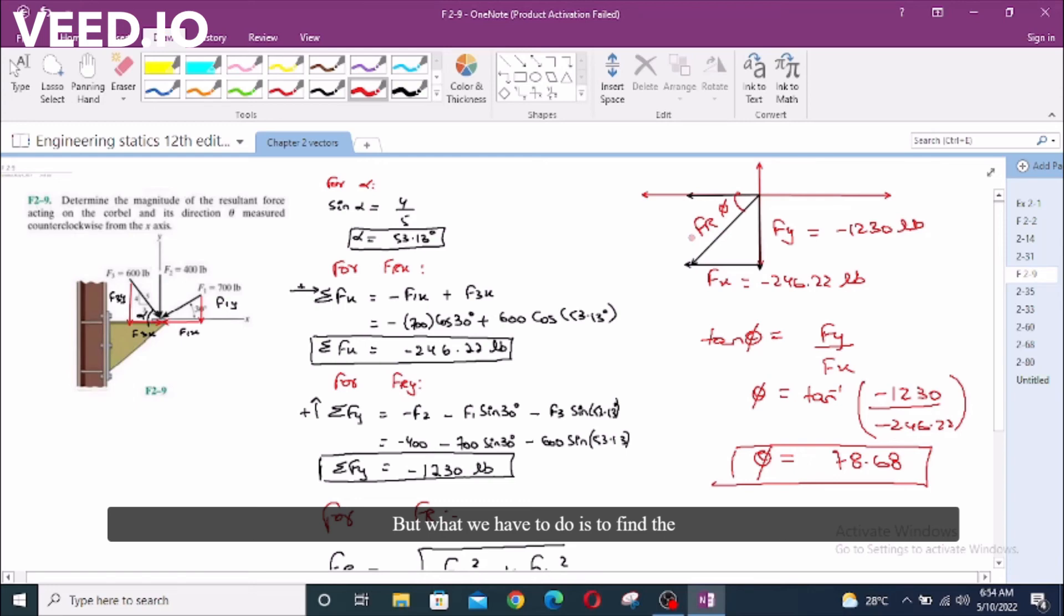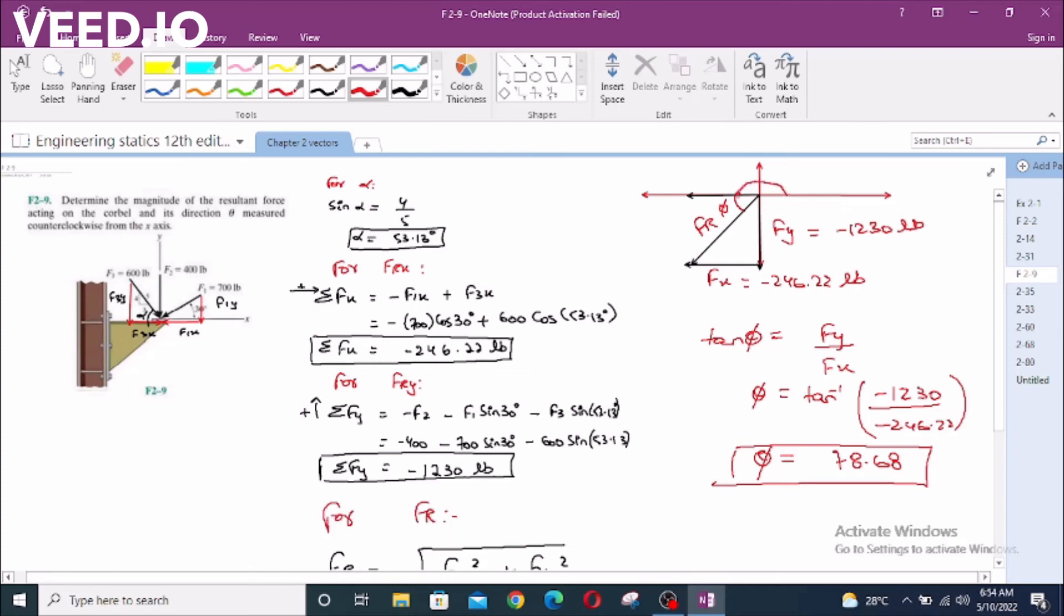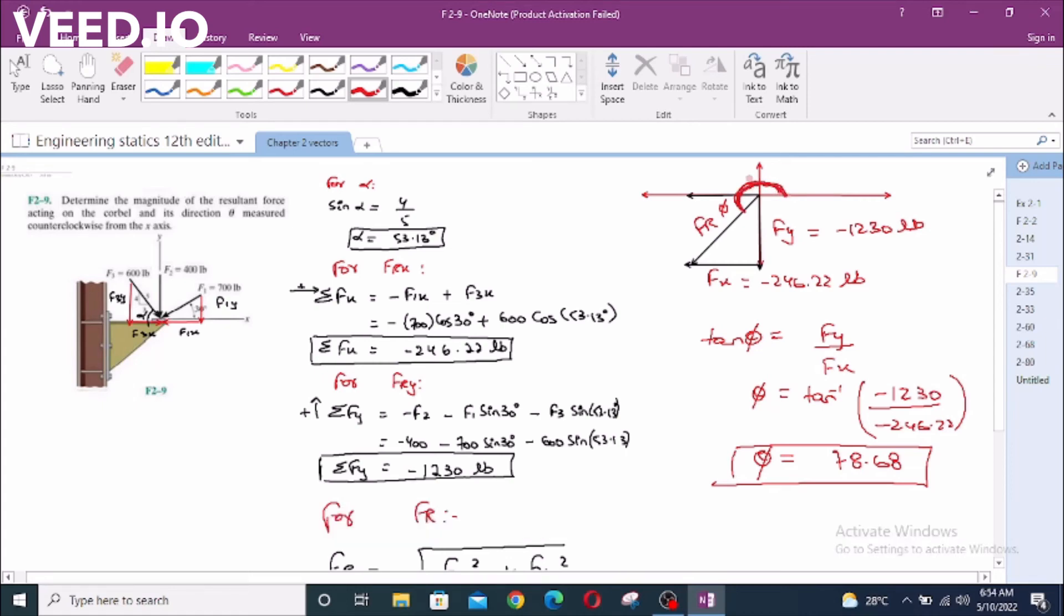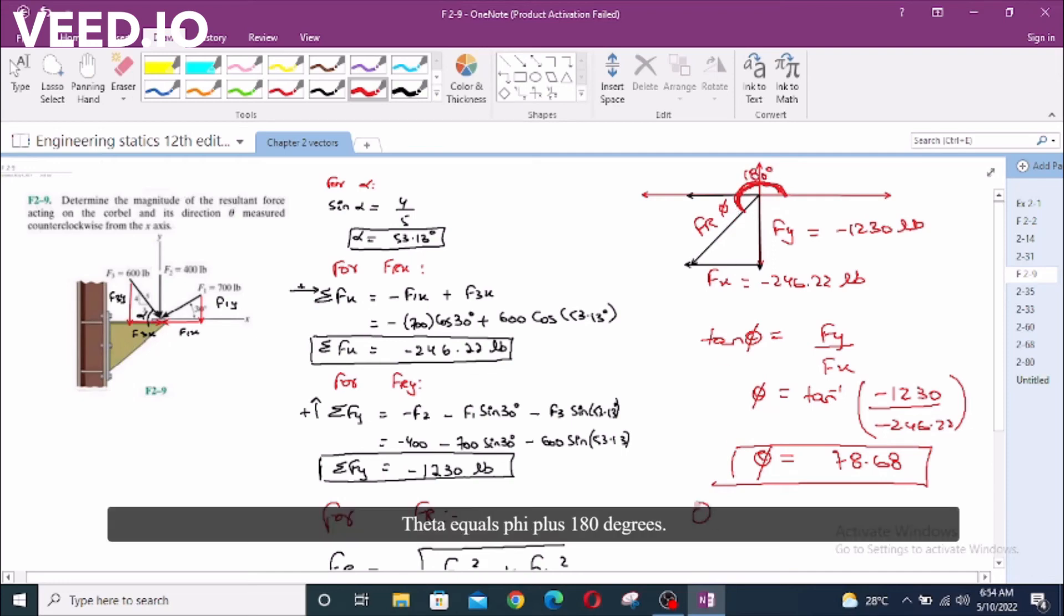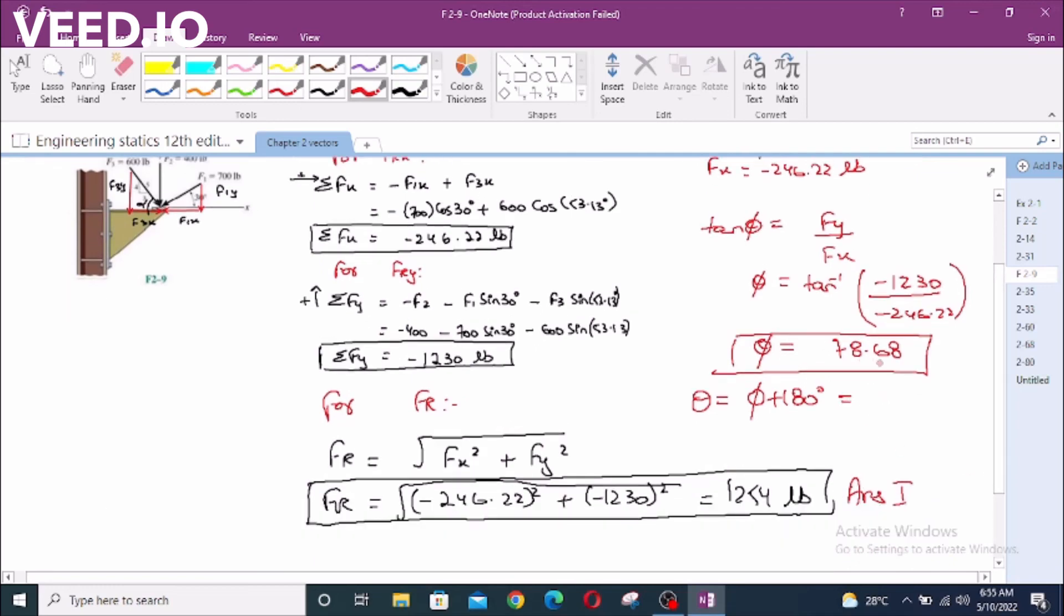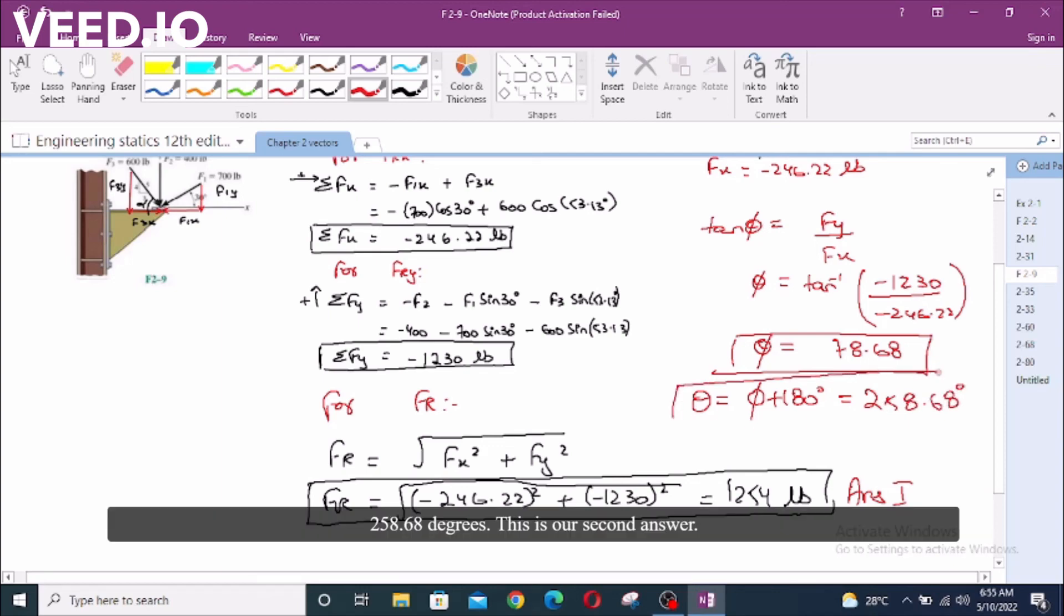But what we have to do is angle measured counterclockwise from the x-axis. We have to go all the way up here. This is our angle made counterclockwise from the x-axis. This is 180 degrees. So what we have: theta equals phi plus 180 degrees. This will give us 78.68 plus 180. We have 258.68 degrees. This is our second answer.